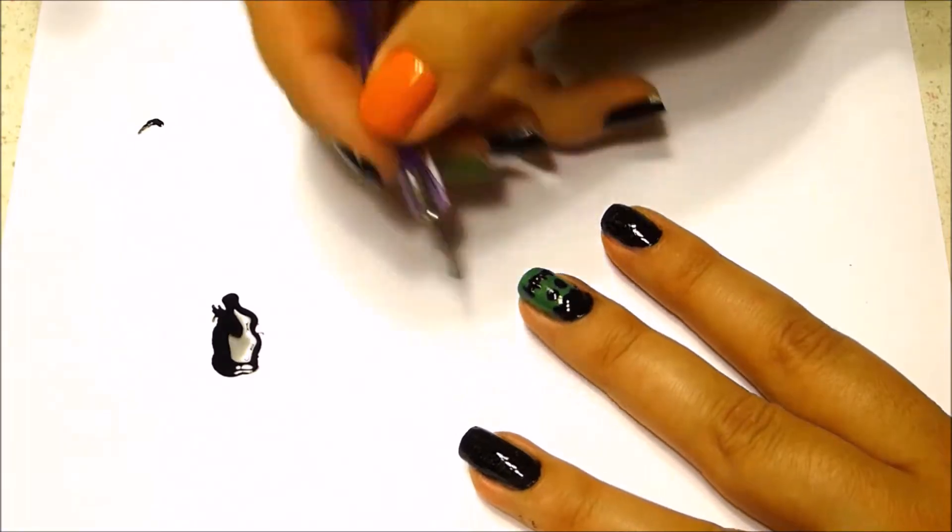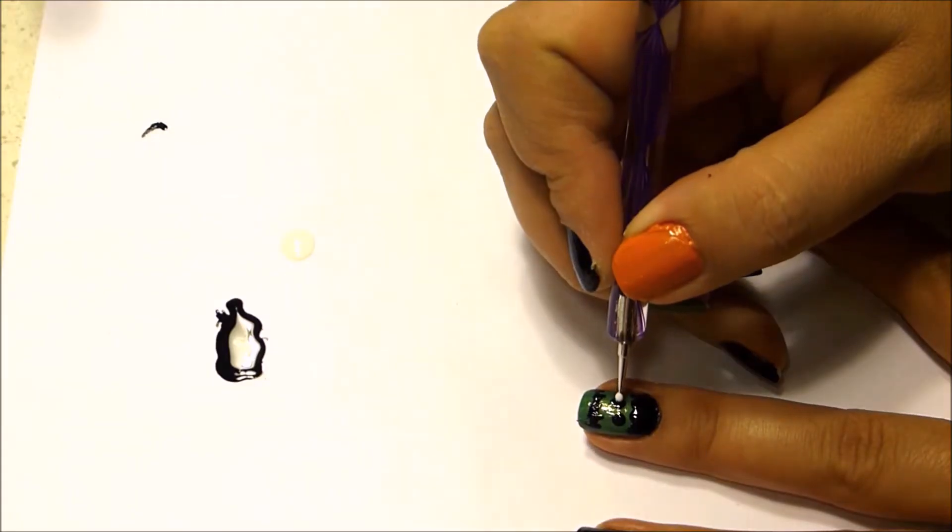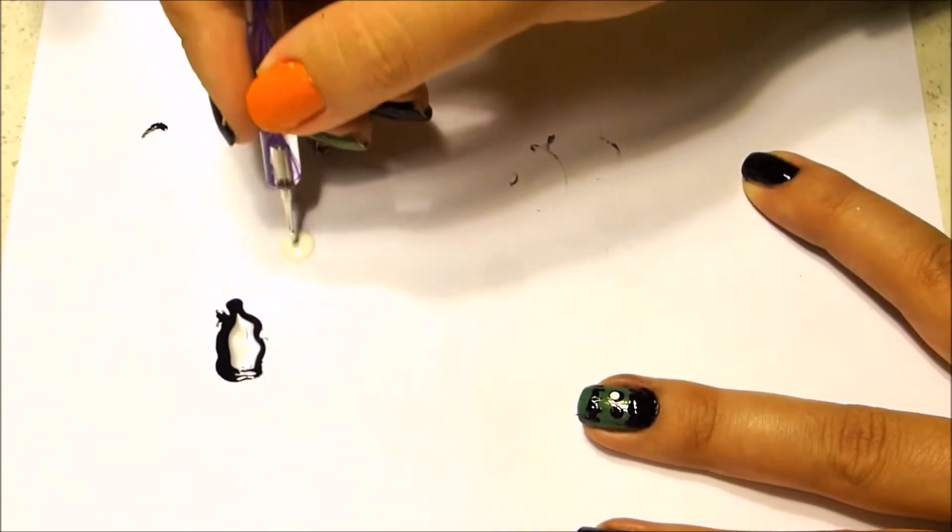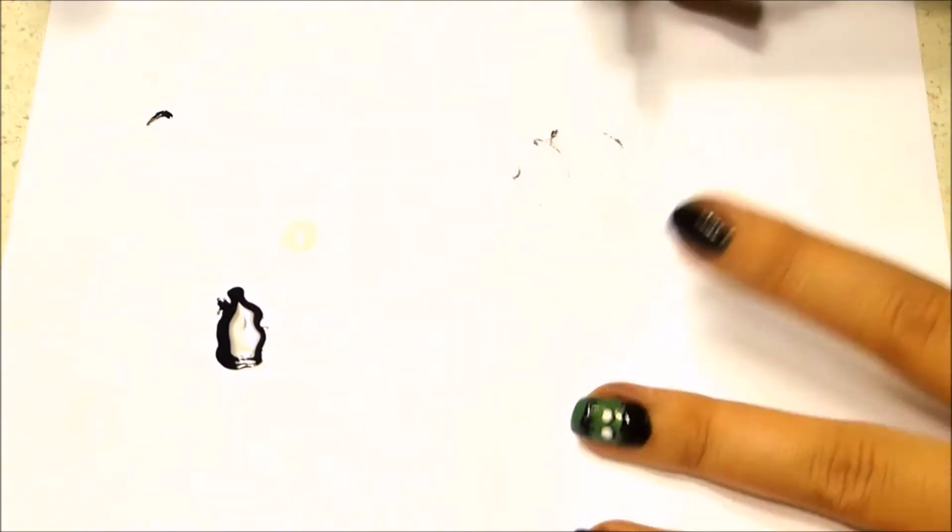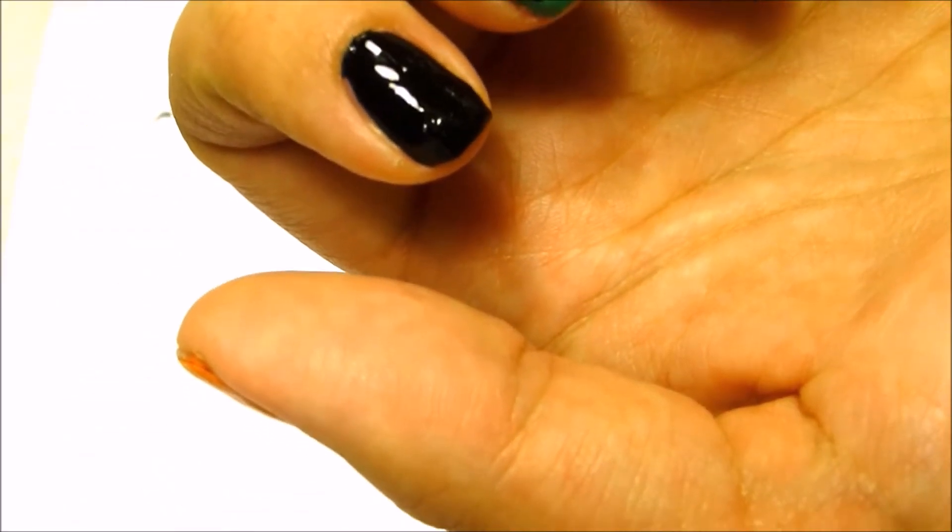Now take some white nail polish and your dotting tool and you're going to make some white eyeballs on top of your black eyeball just like that. Then you're going to put black eyeballs on top of the white eyeballs.